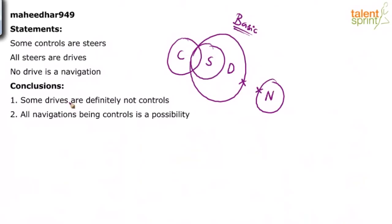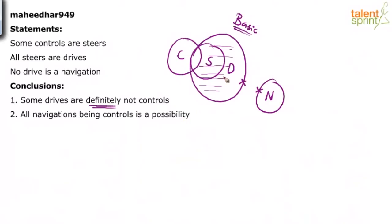First conclusion: some drives are definitely not controls — is it true or false? This is a definite conclusion type, so we have to check not only the basic diagram but also the possible diagrams. If you look at the basic diagram, yes, some drives are not controls — those outside drives are not controls. But will it always be true?